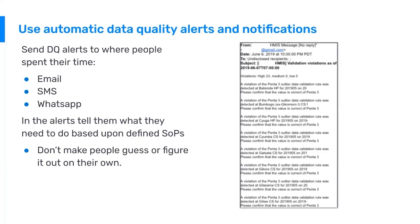It's also very important that the notifications automatically sent to someone's email or via SMS give the user specific instructions on what needs to be done when that notification is received. Don't just send a generic plain text notification — give the user a specific action point to follow up on. In this example email, the first notification states that a PINTA-3 outlier validation rule was detected at a specific health facility on a specific date, and the instruction is: please confirm the value is correct for PINTA-3. These alerts and notifications need to be that specific or even more specific.